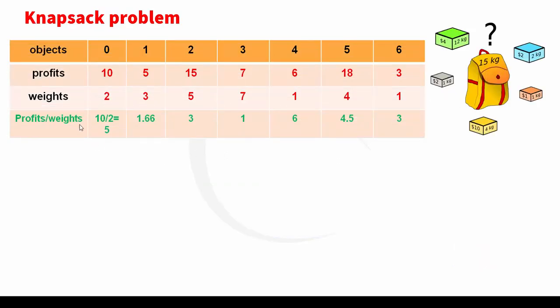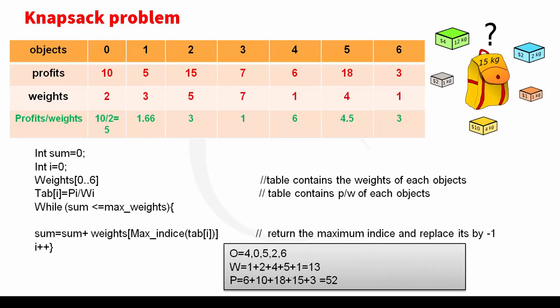The first step, we try to divide each profit object by its weight, as we see in the last row in the table. I take the maximum number and this case is 6. So I take the fourth object and I keep his profits and weights, as we see in the second maximum number.